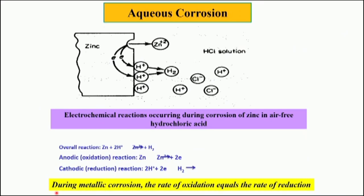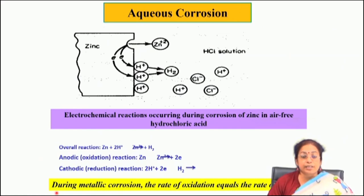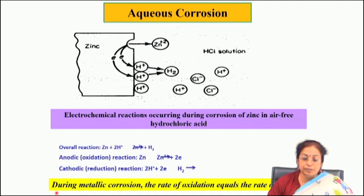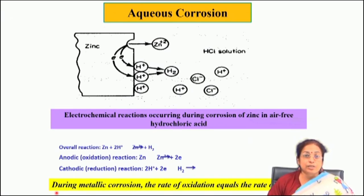Corrosion occurs in three different ways: aqueous corrosion, dry corrosion or high temperature oxidation, and liquid metal corrosion. In aqueous corrosion, when zinc is exposed to hydrochloric acid solution, there is a process where zinc converts to zinc ions — this is the anodic reaction — and the cathodic reaction is where hydrogen ions change to hydrogen molecules. In the anodic reaction there is release of electrons and in the cathodic or reduction reaction there is acceptance of electrons. At equilibrium, the rate of anodic reaction equals the rate of cathodic reaction.